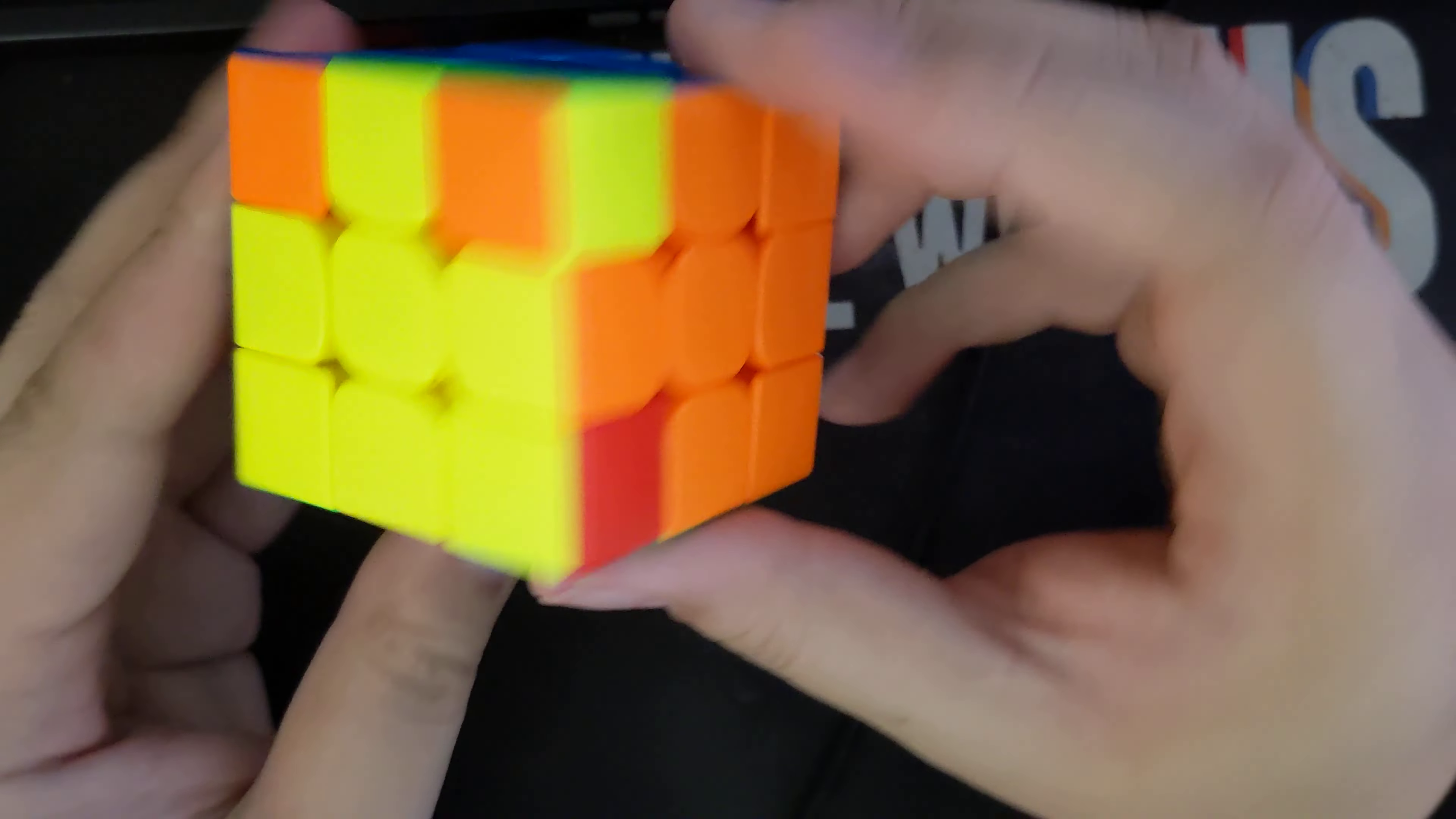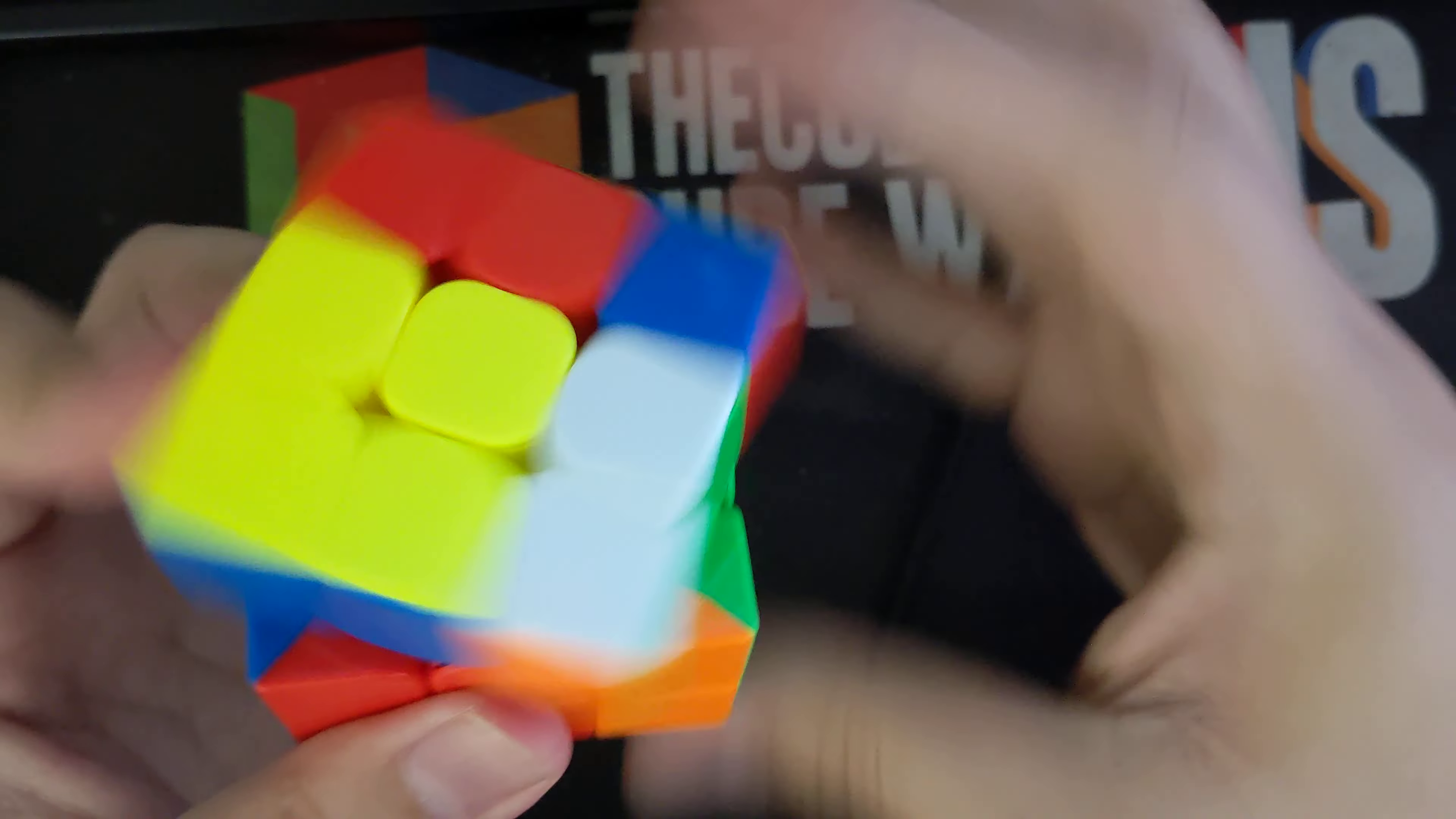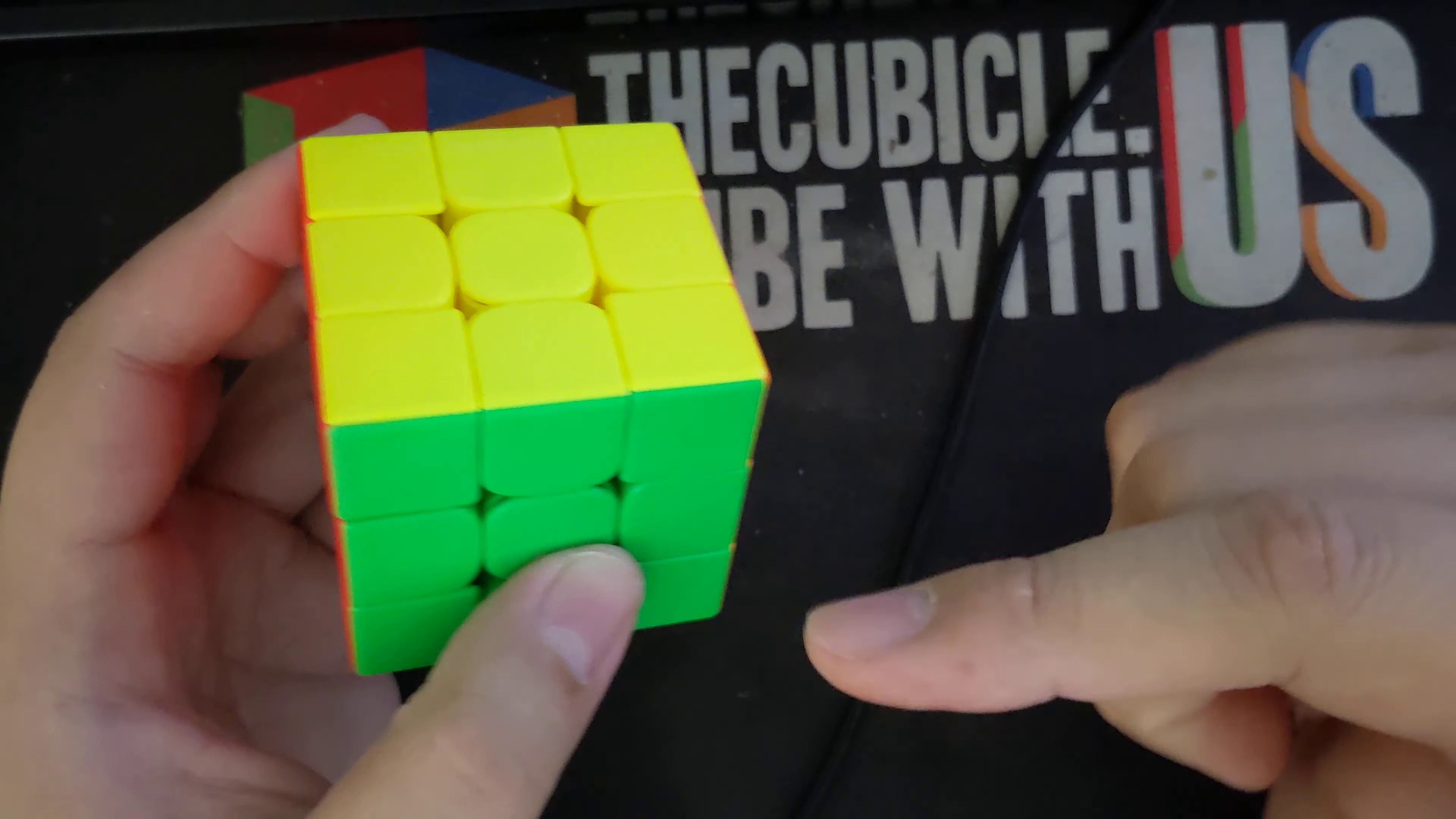And now this will show up on algorithm sheets for OLL, and I'm just going to go ahead and solve this. So again, it doesn't really matter which corner you originally twisted, as long as you fix it at the end.